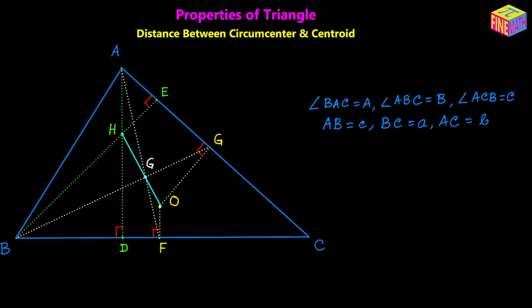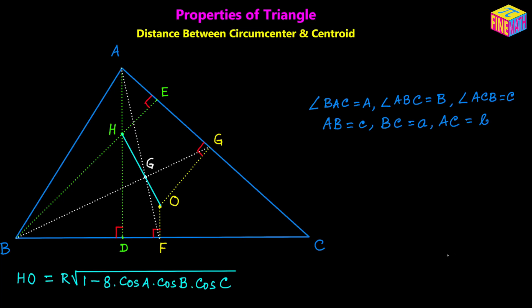In this video we are going to calculate the length of GO. We already know the length of HO from another video I posted a few days ago — the link is in the description. From that video we know that HO is equal to R times the square root of 1 minus 8 times cosine A times cosine B times cosine C. Here R is the circumradius of this triangle — that's the standard notation for the circumradius.